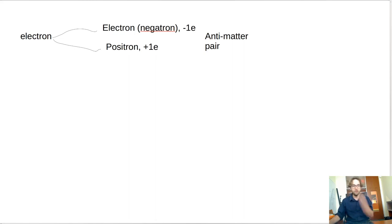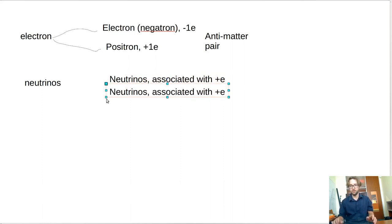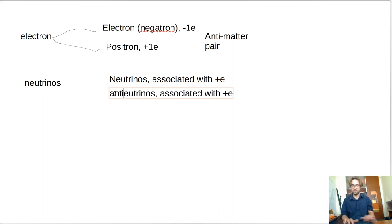Up next, we see something similar for neutrinos. So there are both neutrinos, which are associated with positive electrons for reasons that we see later in the course, and antineutrinos, which are associated with negative electrons. And so these form their own antimatter pair.